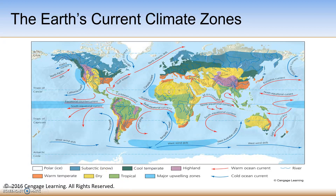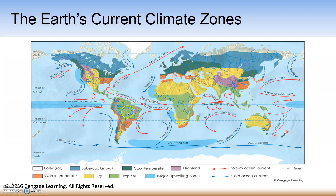Most dry areas are located along the same latitude around the Tropic of Cancer, and tropical areas are typically located along the same latitude near the equator. There is a clear similarity in terms of where these climate zones are located in relation to latitude going north and south of the equator.